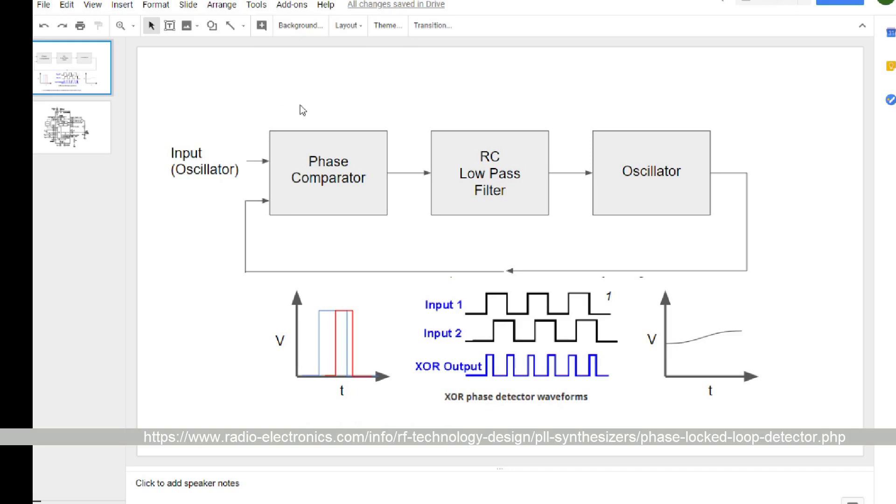So anyway, the phase-locked loop is a pretty common circuit in electronics. It has three main parts. It has this comparator, a filter, and an oscillator.